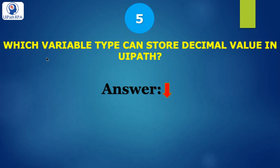Which variable type can store decimal values in UiPath? Answer is Double. Only Double can store this type of value. So if you want to perform calculations like division, you will get decimal values as well, so you have to create your variable with the type Double.